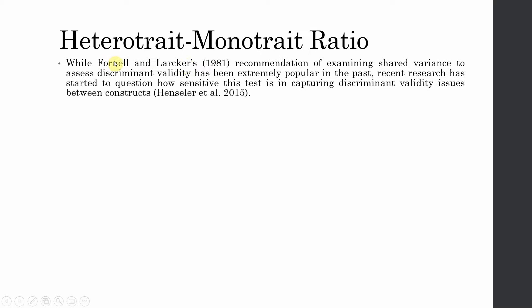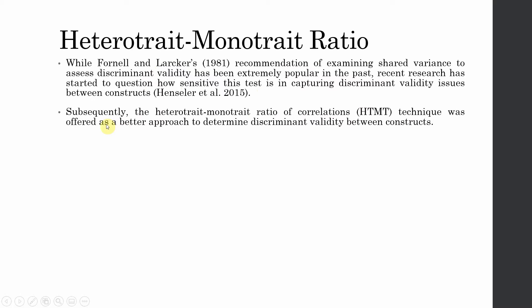Regarding the heterotrait-monotrait ratio: while Fornell and Larcker's recommendation of examining shared variances to assess discriminant validity has been extremely popular in the past, recent research has started to question how sensitive this test is in capturing discriminant validity issues between constructs. Henseler and others' 2015 paper is the go-to reference to understand the issues with the Fornell and Larcker criteria.